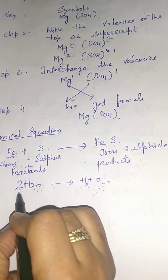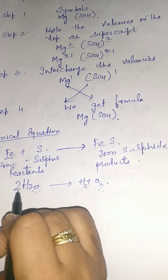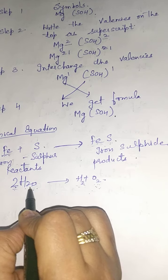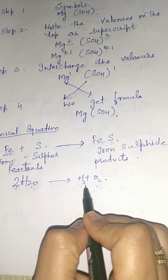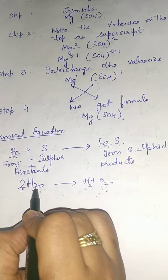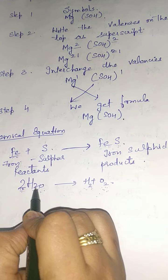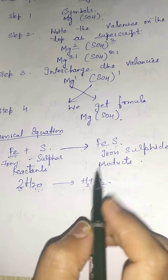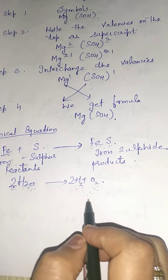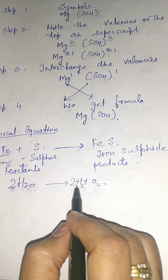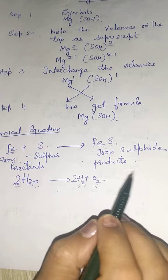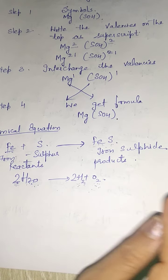But whenever I put 2 there, the number of hydrogen atoms also increased — from 2 to 4 on the product side. So to balance the hydrogen atoms, I will put 2 on the reactant side as well. Now the number of hydrogen atoms is 4 on both sides. This equation is now balanced.